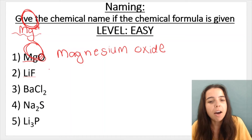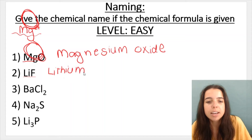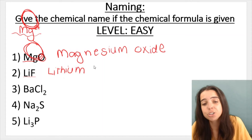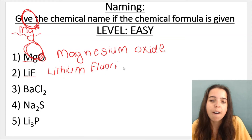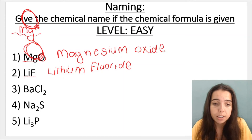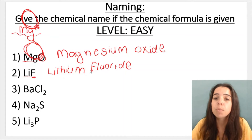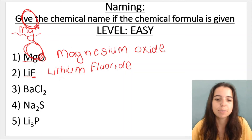Number two: Li is lithium. It's the cation, so it stays as is. And F, because it's the anion, it changes from fluorine to fluoride. So the answer is lithium fluoride, not lithium fluorine. F is the anion, so its name changes from fluorine to fluoride.